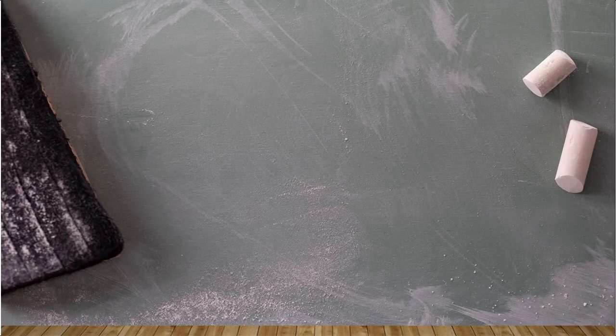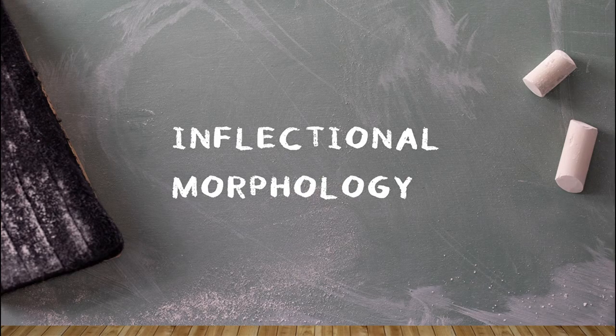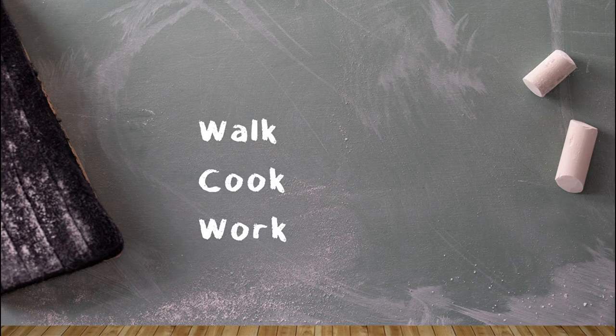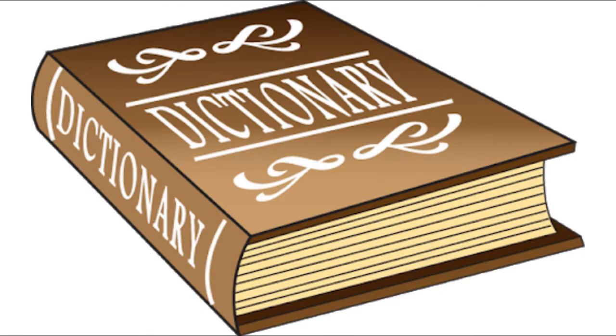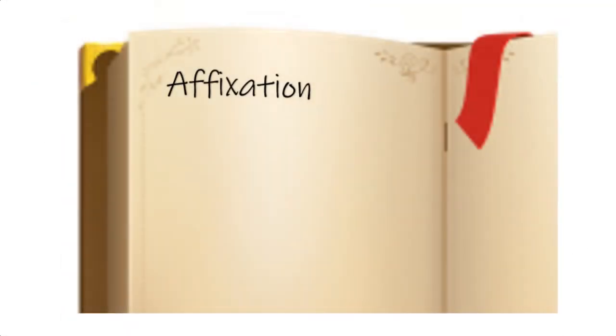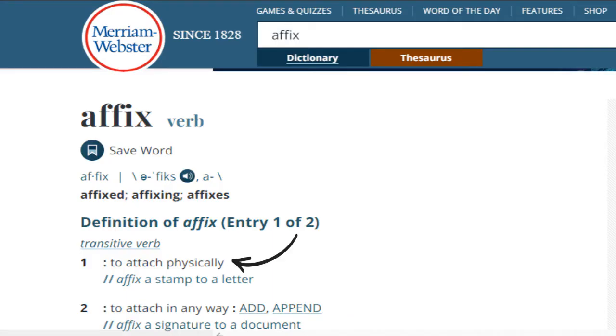If you are or have been a student of French, English, or German, you probably know how easy these kinds of mistakes are to make. In this video, we're talking about inflectional morphology, or adding grammatical information to a word via morphological transformations. In English, the most common type of inflection is affixation — an easy word to remember because to affix means to stick something to something else, which is essentially what we're doing here.